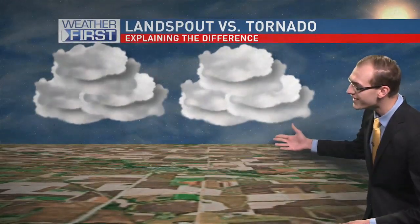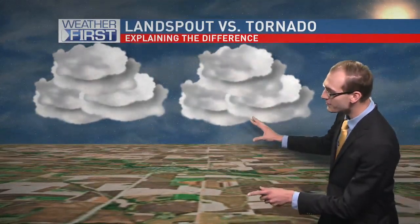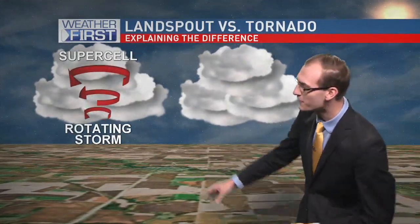Land spouts tend to be pretty weak overall, and they form in very different ways from your more classic tornadoes. Both require a thunderstorm to be in place. However, the typical tornadoes that we see are formed by supercells — that means rotation is actually occurring in the storm itself, and that then creates the tornado at the surface.